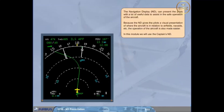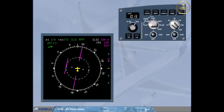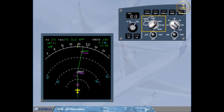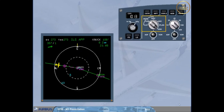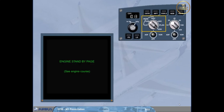The Navigation Display, ND, can present the pilots with a lot of useful data to assist in the safe operation of the aircraft. Because the ND gives the pilots a visual presentation of where the aircraft is in relation to airfields, nav aids, etc., the operation of the aircraft is also made easier. In this module, we will use the Captain's ND. There are five Navigation Display modes available on the ND, selected by the Mode Selector on the EFIS control panel. In addition, an Engine Display mode presents the engine parameters, used in some ECAM failure cases.